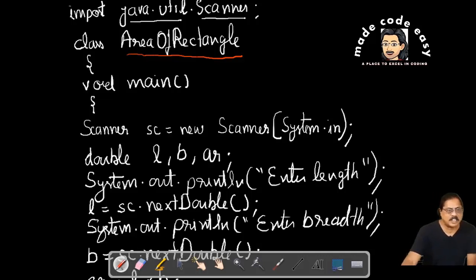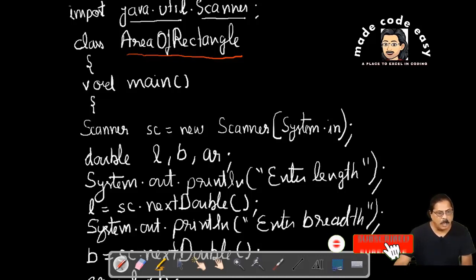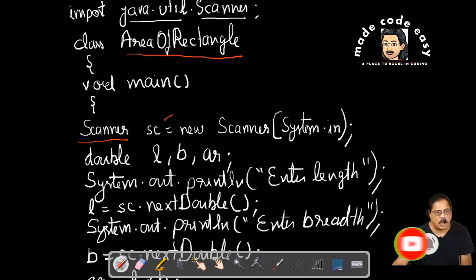Now we have used here the Scanner class and this is the object of a scanner. You can write sc, you can write x. If you write x here, then you have to write x there. And you see Scanner and System in capital letter because this is a class. This statement is known as declaration statement.